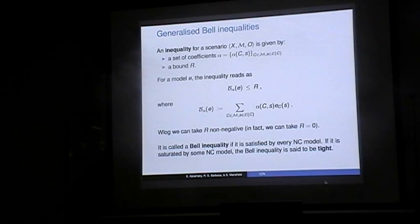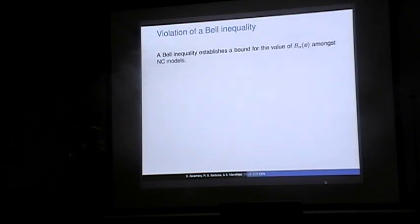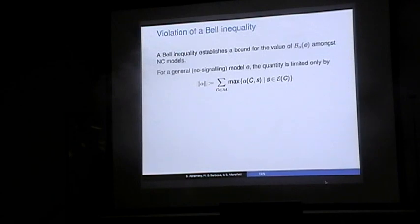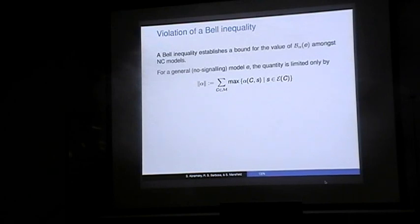If such an inequality is satisfied by every non-contextual model — corresponding to every local model in the locality setting — it's called a Bell inequality. If it's saturated by some non-contextual model, we say it's a tight Bell inequality. The Bell inequality establishes the bound on the value alpha(E) among all non-contextual models. For general no-signaling models, these values might exceed the inequality bound. For the usual CHSH Bell inequality the bound is 3, but no-signaling can violate it up to 4.